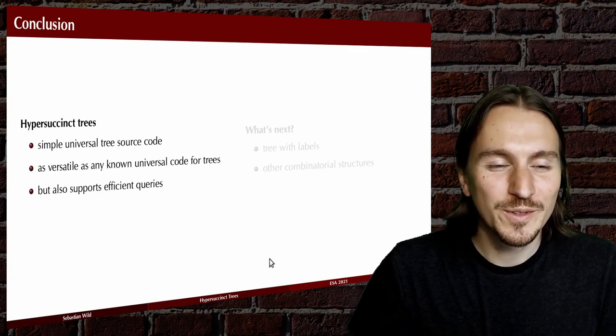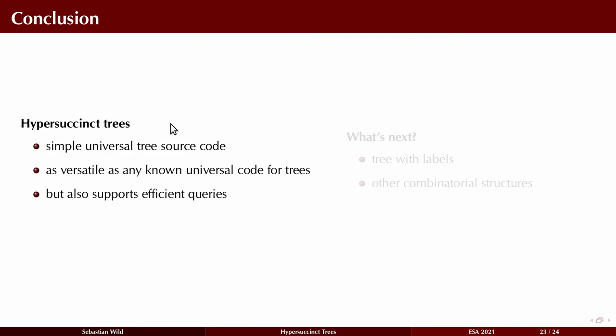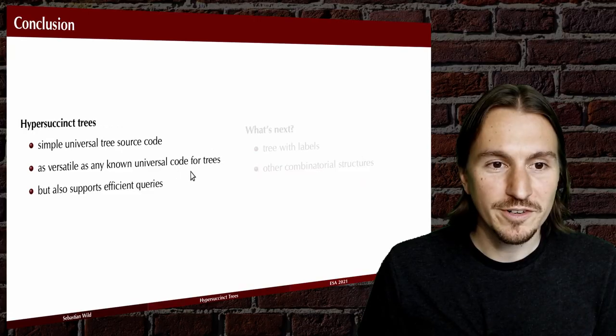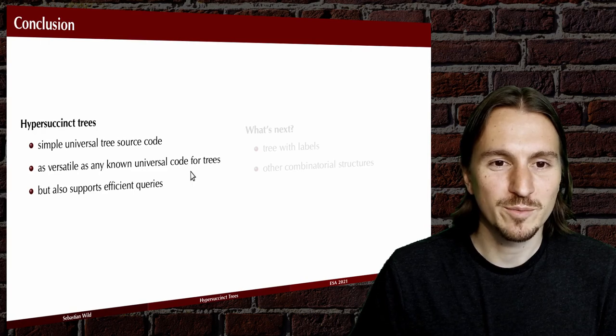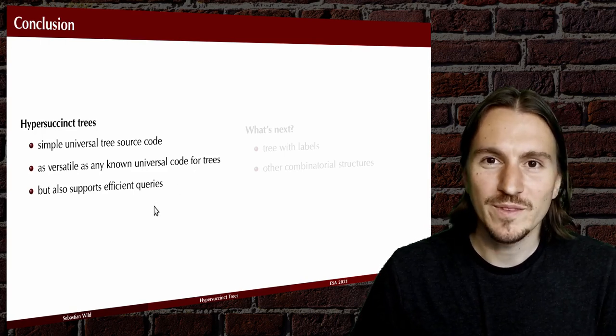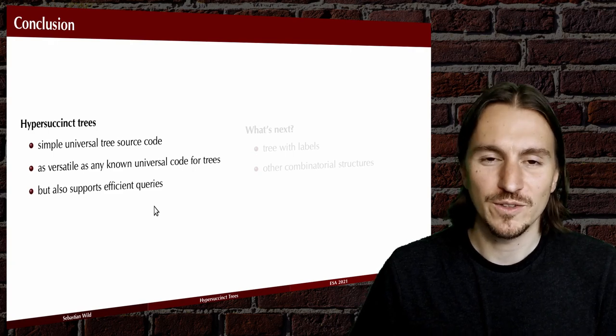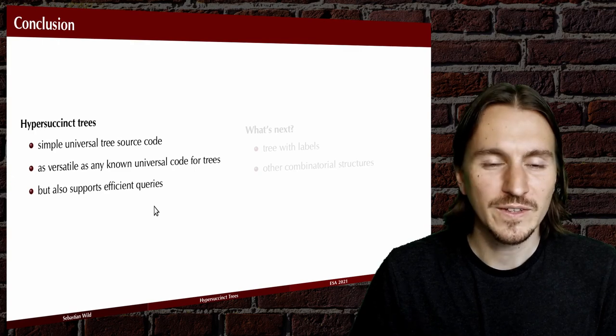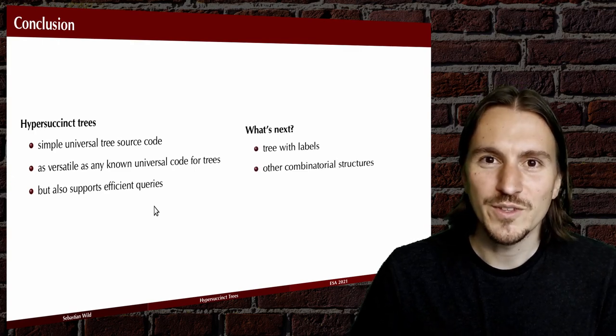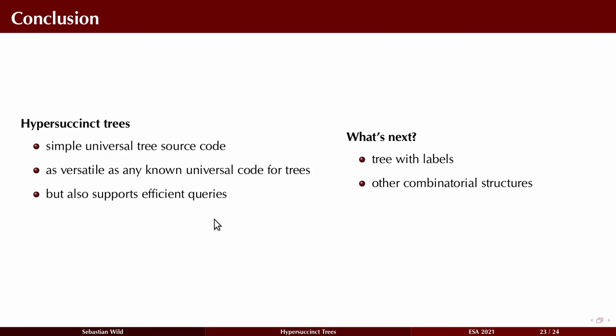To conclude: I've shown you hyper succinct trees, which are very simple if you're after a source code for trees, but as versatile as any other known universal source code for binary trees, and at the same time can be transformed into a data structure supporting all sorts of operations in constant time using tree covering techniques. We'd like to extend this to trees with labels and other combinatorial structures — this is ongoing work. Thanks for your attention, and I hope to answer questions in the session.